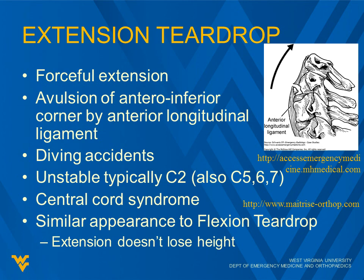Extension teardrop fractures have a different mechanism — forceful extension causing avulsion of the anterior inferior corner by the anterior longitudinal ligament. These are common with diving accidents, typically unstable at C2 but also at C5, 6, and 7. Central cord syndrome is common with this, and with central cord syndrome you get the majority of your symptoms in the arms and much less in the legs. Extension teardrop has a similar appearance to flexion teardrop, but extension does not typically cause loss of vertebral body height — that's a good way to differentiate them.